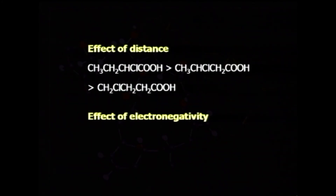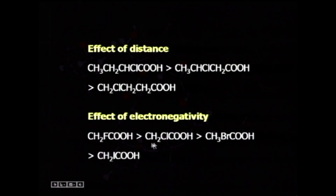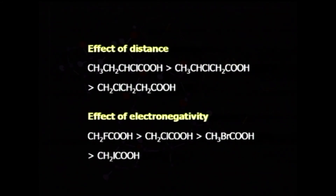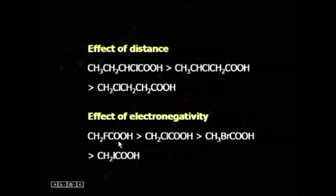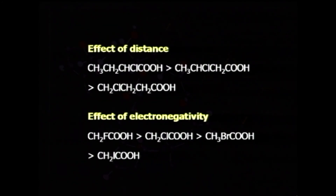Regarding the effect of electronegativity: fluorine is most electronegative, followed by chlorine, bromine, and iodine. Hence the order of acidic strength is: fluoroacetic acid is the strongest and iodoacetic acid is the least acidic among the haloacetic acids.